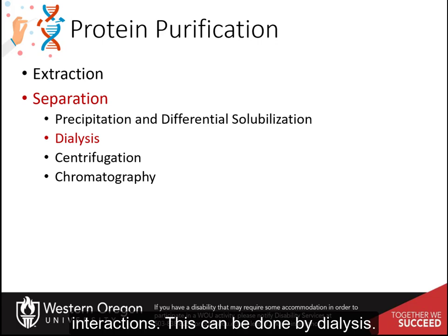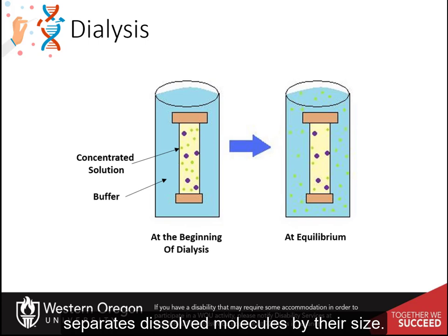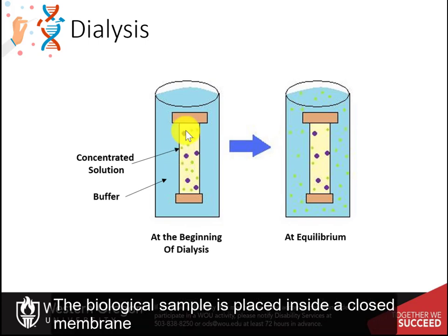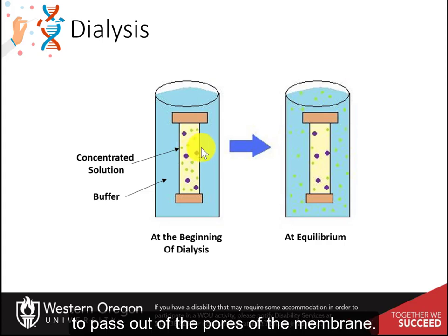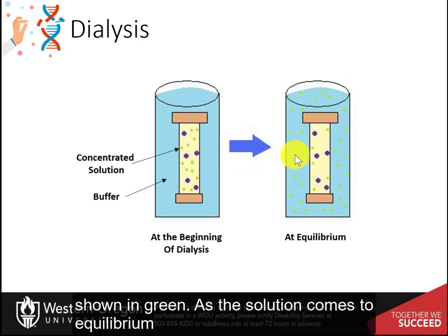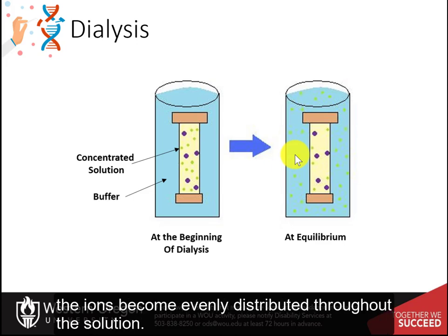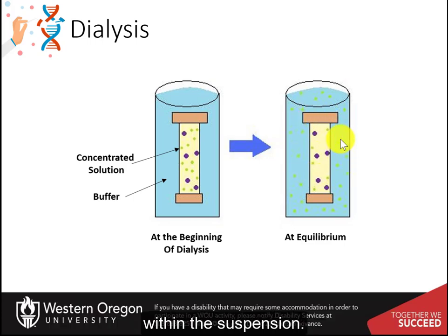This can be done by dialysis. The process of dialysis separates dissolved molecules by their size. The biological sample is placed inside a closed membrane where the protein of interest is too large to pass out of the pores, but through which smaller ions can easily pass. As the solution comes to equilibrium, the ions become evenly distributed throughout the solution while the protein remains in the dialysis tubing, reducing the overall salt concentration within the suspension.